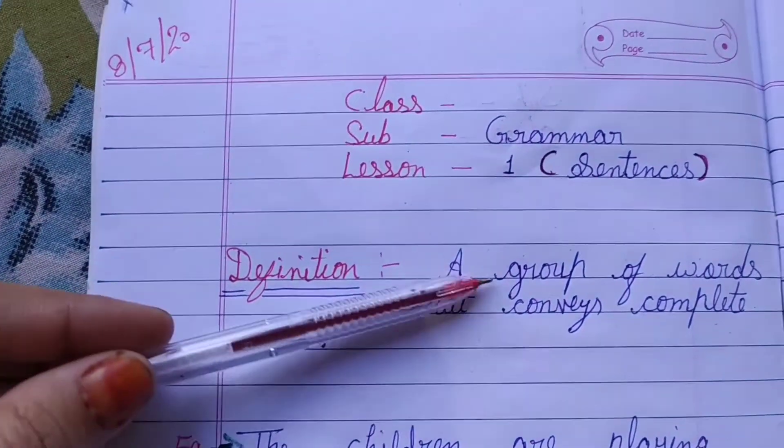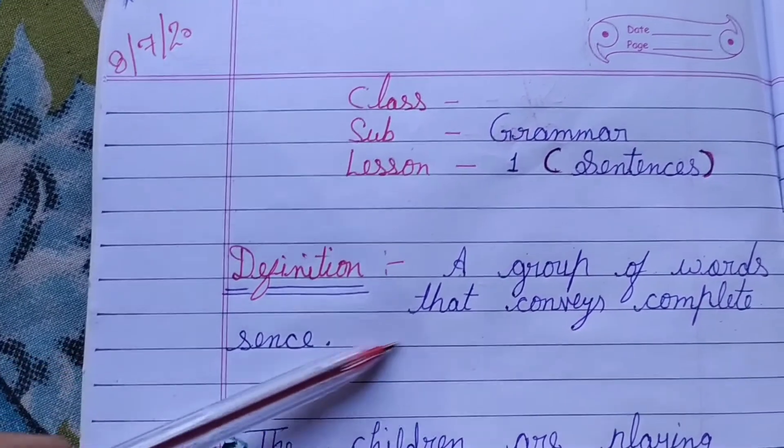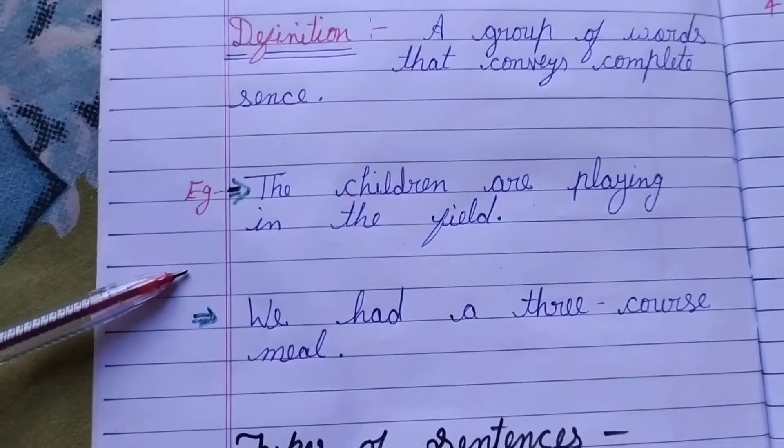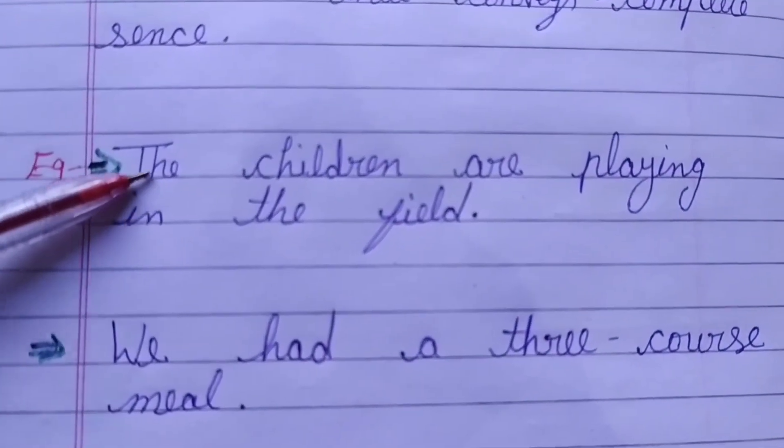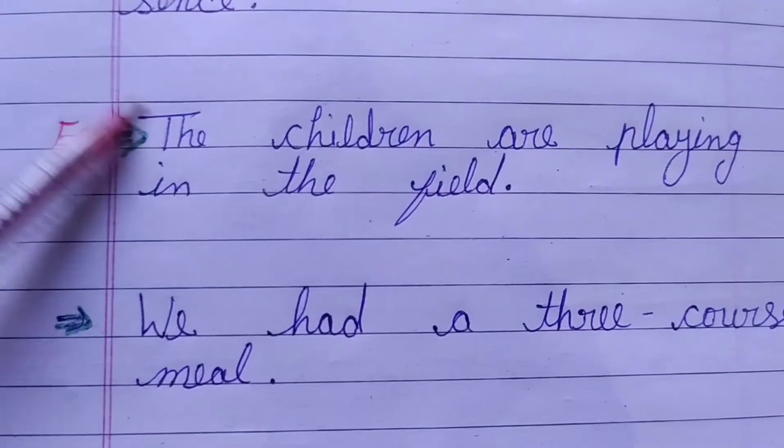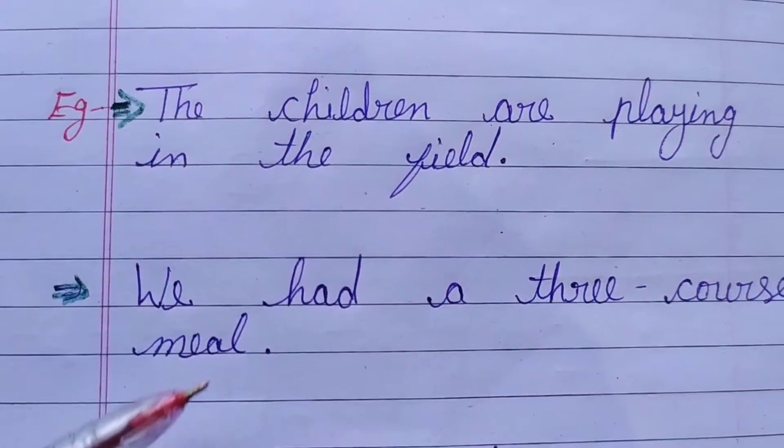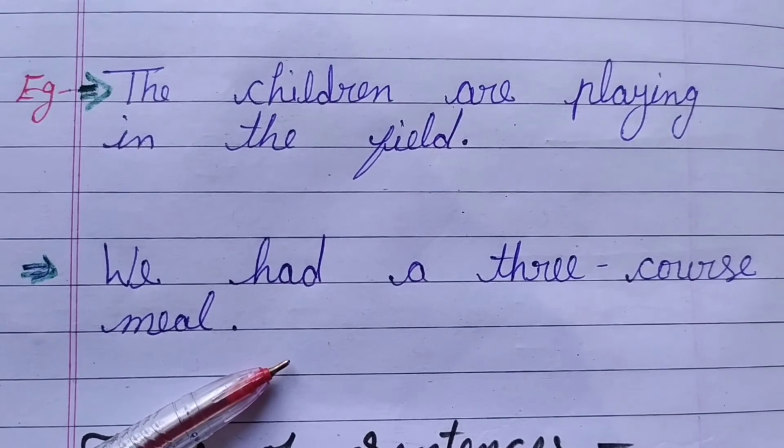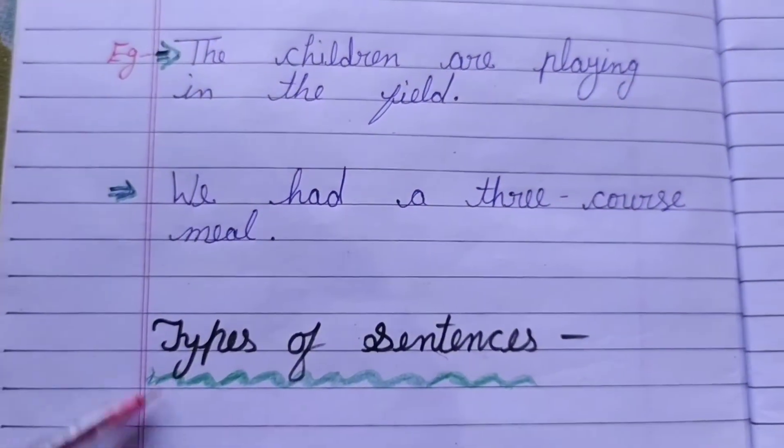That's number one. What definition? A group of words that convey complete sense. For example, the children are playing in the field. We had a three-course meal.